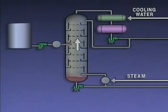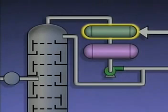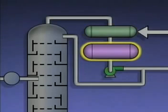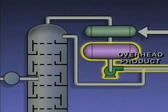The vapors that rise up in the tower are routed to a condenser. The purpose of the condenser is to cool and condense the vapors into liquid. From the condenser, the liquid flows into a receiver or accumulator. The receiver provides a reservoir for the liquid. Part of the liquid from the receiver is pumped back into the top of the tower, and part of it is drawn off as the tower's overhead product.